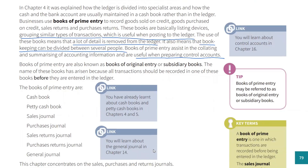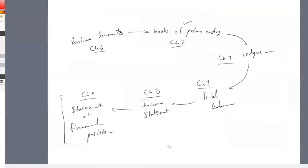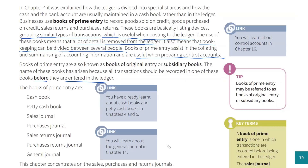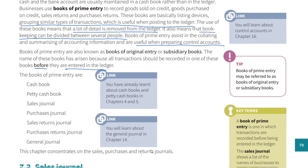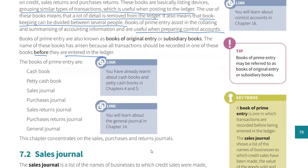Books of Prime Entry are also known as books of original entry or subsidiary books — this is where things first go, entered here before they are entered in the ledger. The Books of Prime Entry are: cash book, petty cash book, sales journal, purchase journal, sales returns journal, purchase returns journal, and general journal. We'll go into detail on each of them.